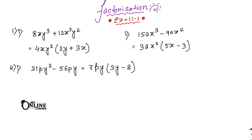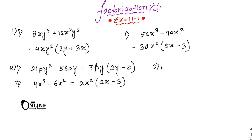Sum number 2.2: 4x³ - 6x². The common terms are 2 and x². So write down 2x². Inside the bracket: 2x minus 3. The answer is 2x²(2x - 3).